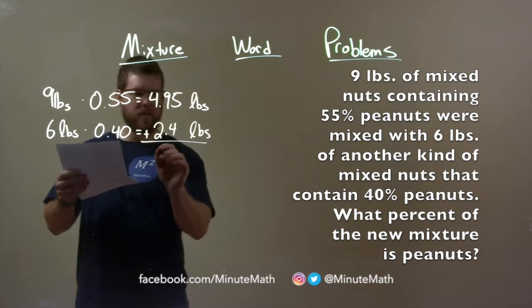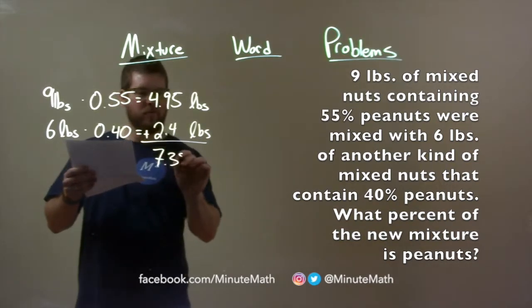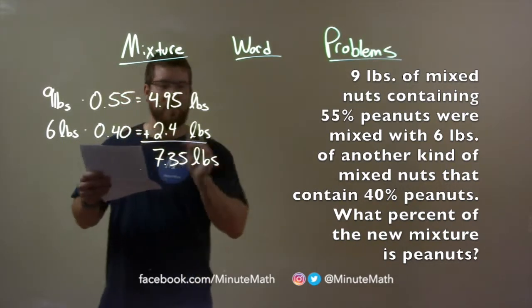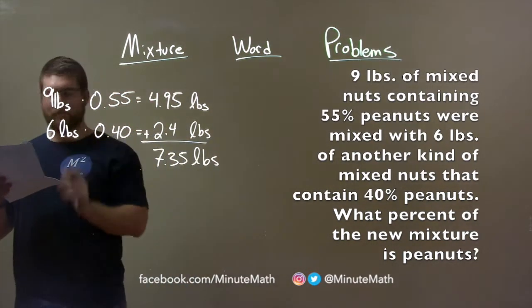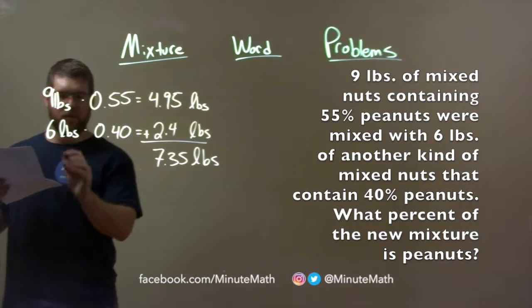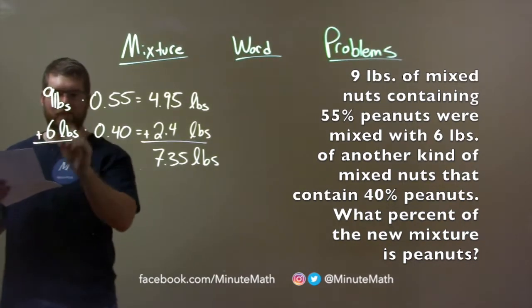Add that together, add these two numbers together, and we have 7.35 pounds of total peanuts. Now, we add the two mixtures together. 9 plus 6 is 15. So we add it like this, is 15 pounds.